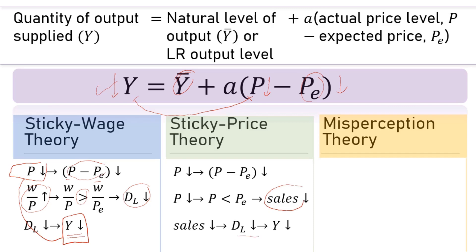Similar to the first theory, from the equation we can see P falling means P minus Pe becomes negative, then Y again will be lower or smaller than Ȳ. And how about the last theory, the misperception or the imperfect information theory?